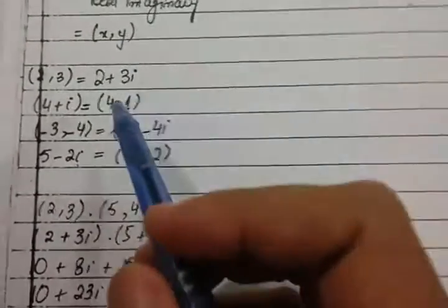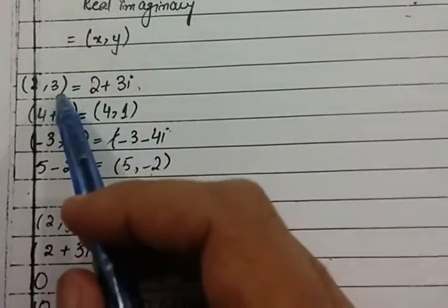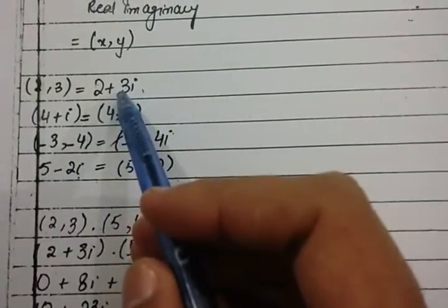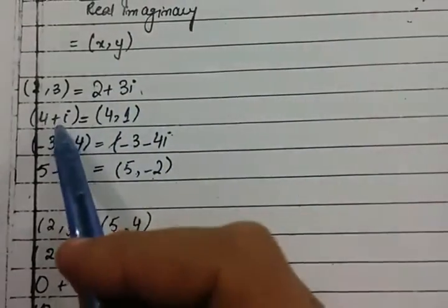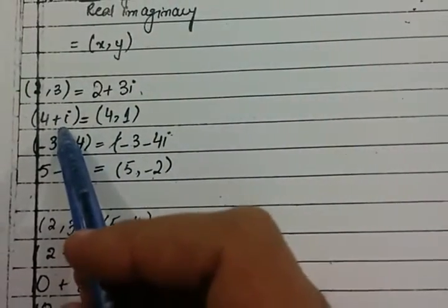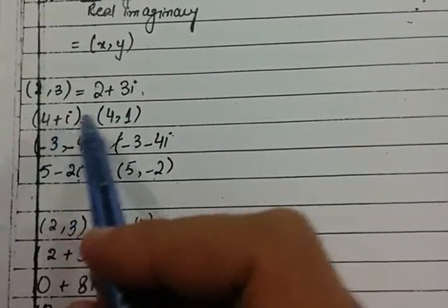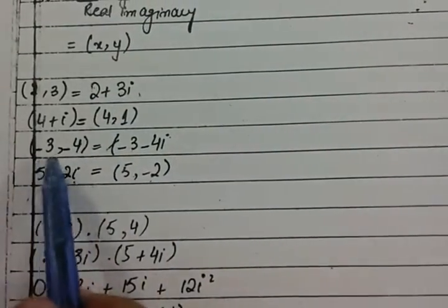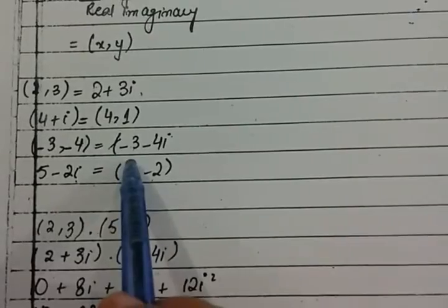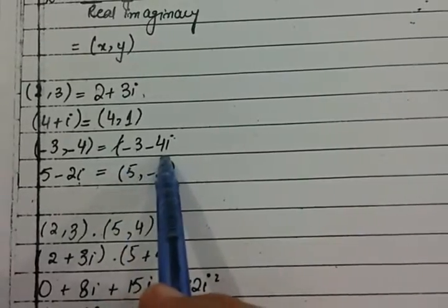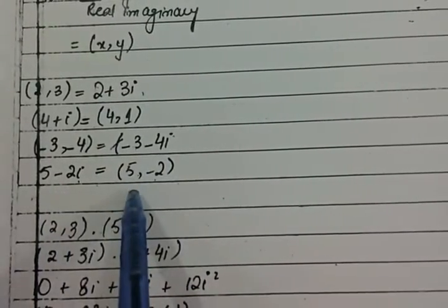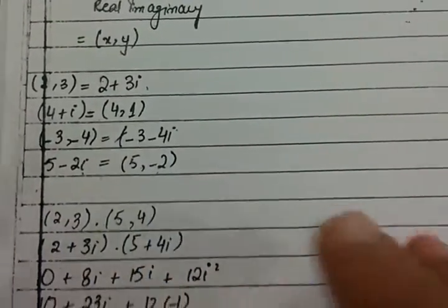For example, if we write (2, 3), then we can write 2 plus 3 iota. If we write 4 plus iota, then we can write (4, 1). Minus 3 minus 4 means minus 3 minus 4 iota. And 5 minus 2 iota means (5, minus 2).